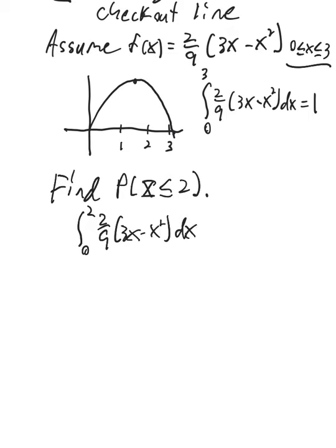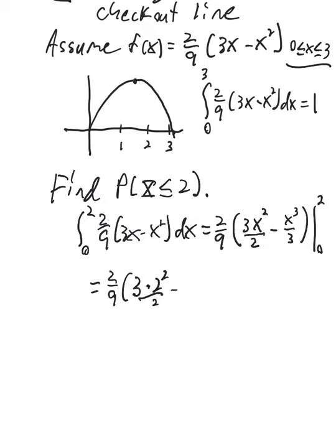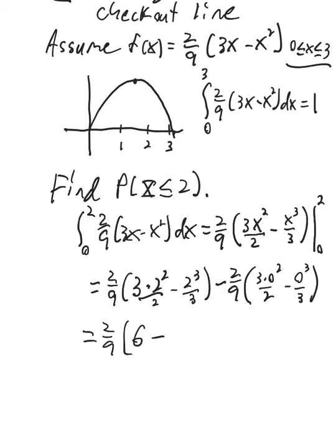So we just do the integration. 2 ninths stays there as a constant. Since we've got a polynomial, this will be using the power rule. The antiderivative of 3x is 3x squared over 2. The antiderivative of x squared is x cubed over 3. We'll put in the limits 0 and 2. So that'll be 2 ninths times 3 times 2 squared over 2 minus 2 cubed over 3 minus 2 ninths. If we put in 0, that's going to be easy. Everything's going to be 0. If we had another value there, we'd have to put that in. So let's see. That's 2 ninths. This will be 12 over 2 or 6. This will be 8 thirds.